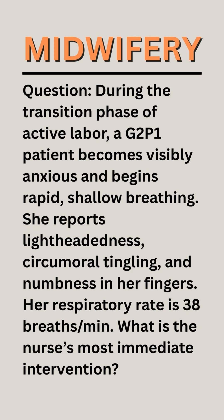Question. During the transition phase of active labor, a G2P1 patient becomes visibly anxious and begins rapid, shallow breathing. She reports lightheadedness, circumoral tingling, and numbness in her fingers. Her respiratory rate is 38 breaths per minute. What is the nurse's most immediate intervention?